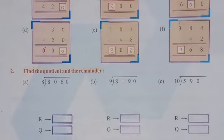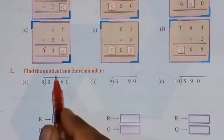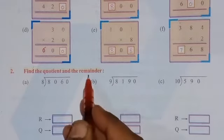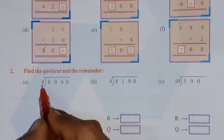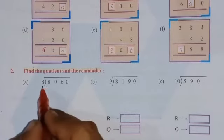See the next question number 2. And in the 2nd question we have to perform divide. The question is given: find the quotient and the remainder. Starting from, we have to divide this number by 8. So start dividing.